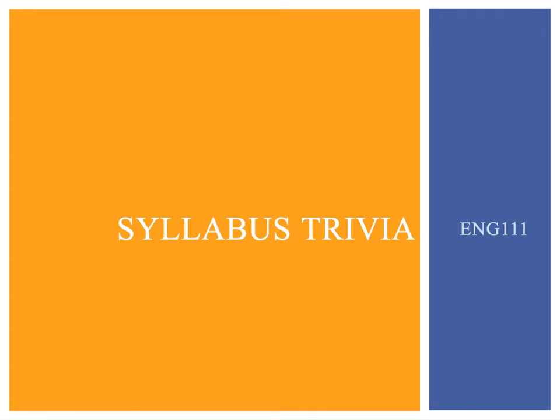This PowerPoint will go over some of the critical elements of your syllabus. Before you begin, pause the video and download the syllabus from our Blackboard course page in the Getting Started link. You will also find the course policies there. You may also want to print the syllabus and course policies.